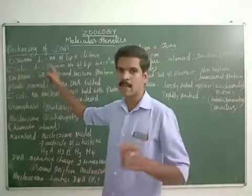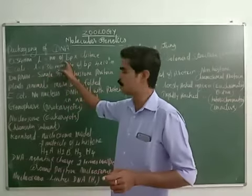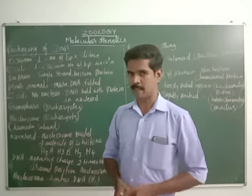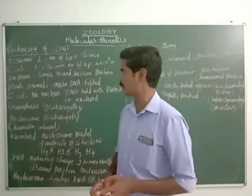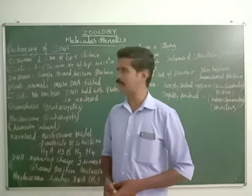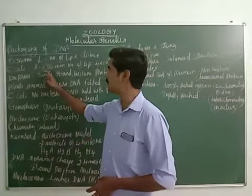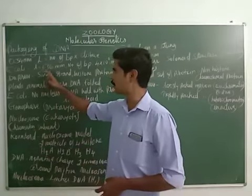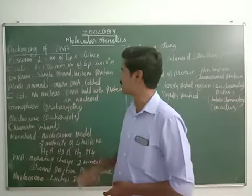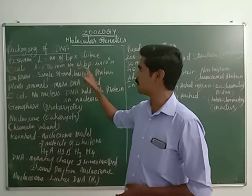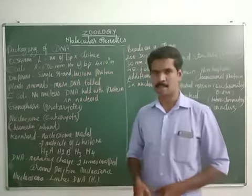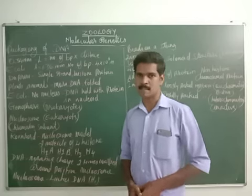To find out the length of a DNA molecule, the number of base pairs is multiplied by the distance between two base pairs. For example, in E. coli bacteria, if the length of DNA is 1.36 micrometers, then the number of base pairs present in that DNA is 4 × 10^6.